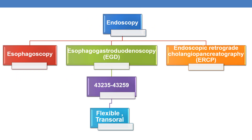In esophagogastroduodenoscopy, the CPTs are in the range 43235 to 43259, and there are two new codes that have been added: 43290 and 43291, which we will discuss further. Unlike esophagoscopy, esophagogastroduodenoscopy is only flexible and transoral. Rigid and other routes are not available for EGD.